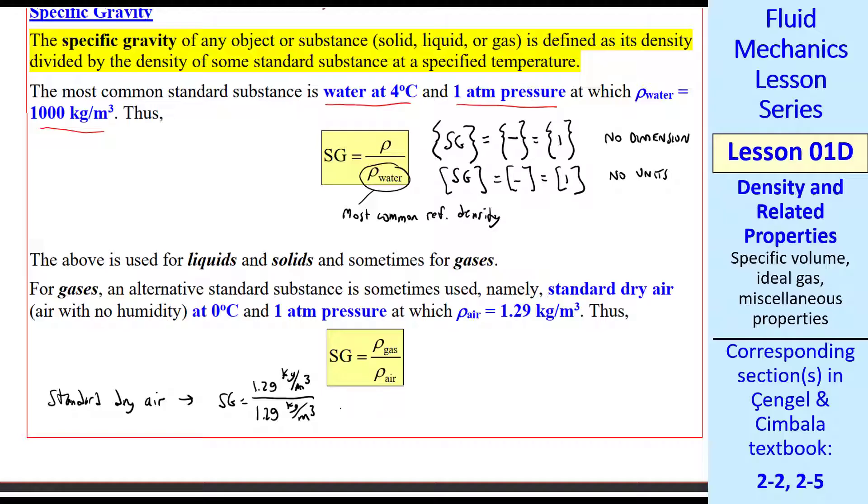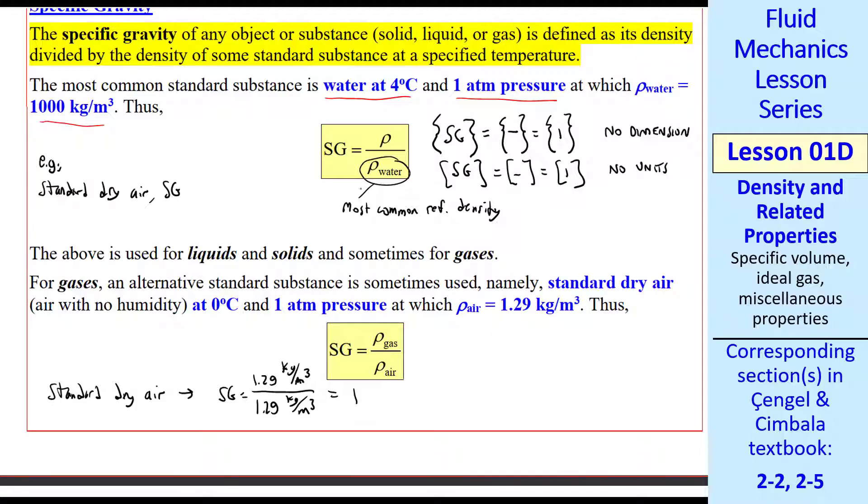If we're talking about standard dry air, its SG with this reference is just 1. If we use the water density as a reference, SG of standard dry air is 1.29 divided by 1000, which comes out to 0.00129.